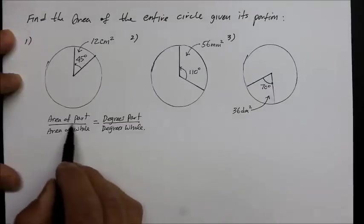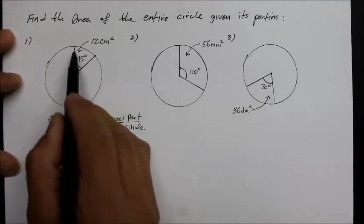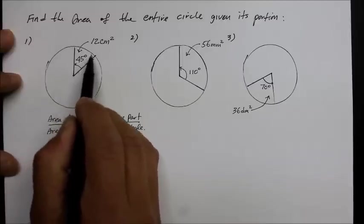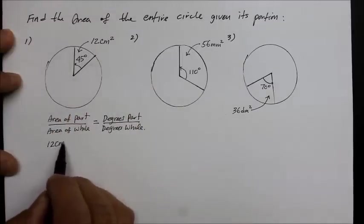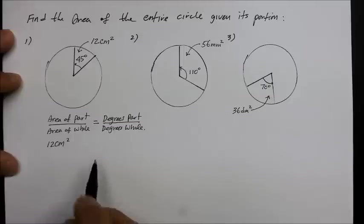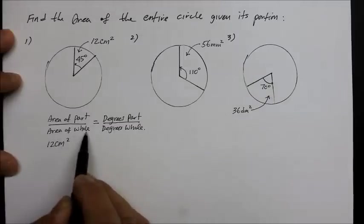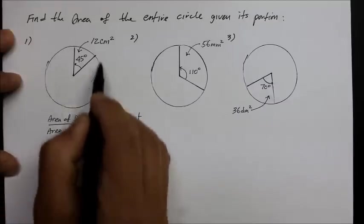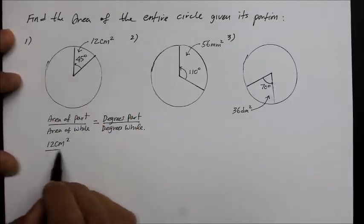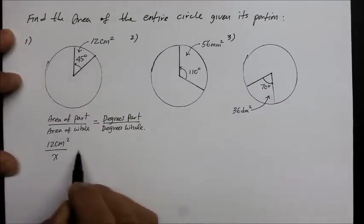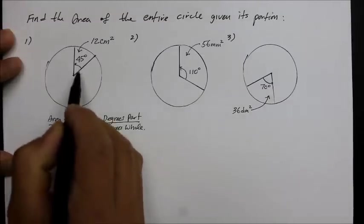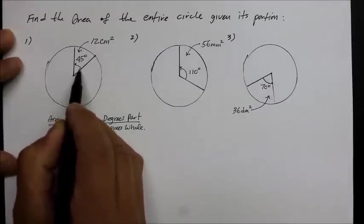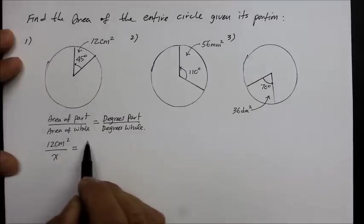So, area of the part. Well, here's the part of the whole thing, and that's 12 centimeters squared. And the area of the whole? I don't know. Yeah, we don't know. We do not know. So, we're going to call it x. And that's going to be equal to the degrees of the part. Well, what's given of the part is 45 degrees. So, we go 45.